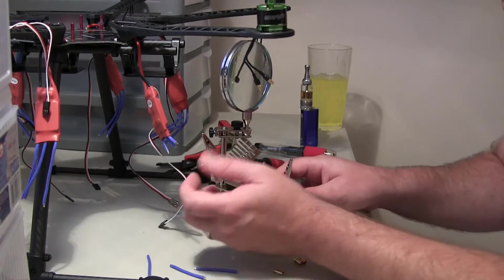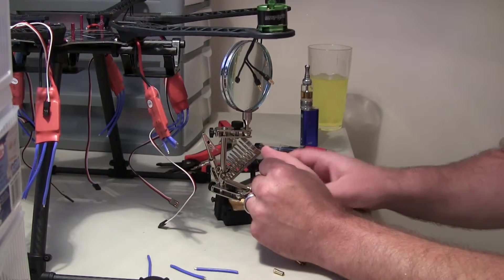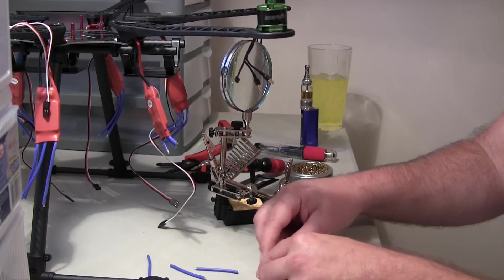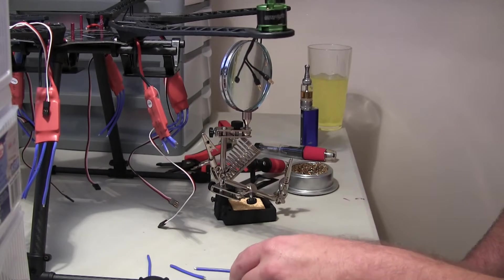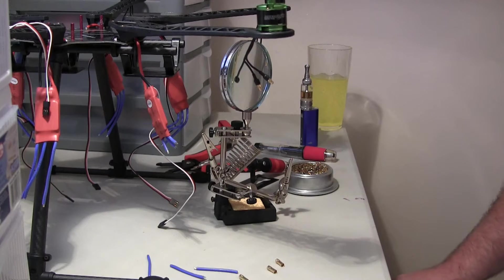And now the next thing I'm going to do is I'm just going to tin each one of these. And then we'll tin the inside of the bullet connectors. And we'll be good to go.